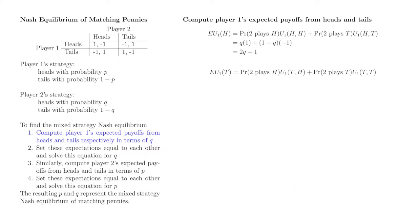When player 1 plays tails, the possible outcomes are tails-heads, which occurs when player 2 plays heads, and tails-tails, which occurs when player 2 plays tails. The probability of tails-heads is equal to the probability of player 2 playing heads, and the probability of tails-tails is equal to the probability of player 2 playing tails. The probability that player 2 plays heads is q, and when that outcome occurs player 1 receives minus 1. The probability that player 2 plays tails is 1 minus q, and when that outcome occurs player 1 receives 1. Player 1's expected payoff when playing tails is 1 minus 2q.